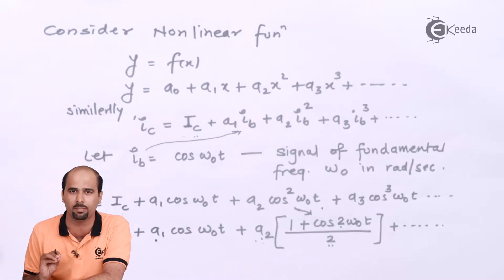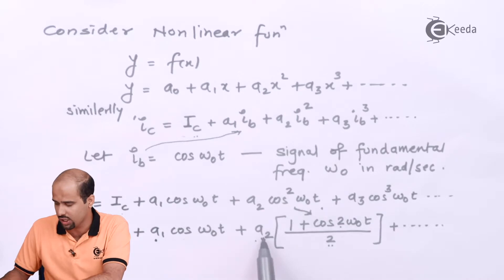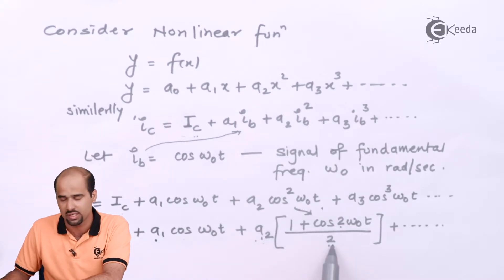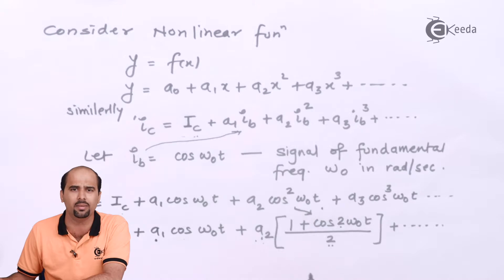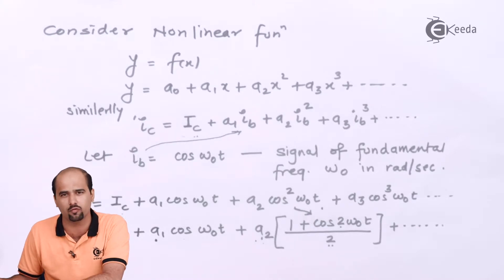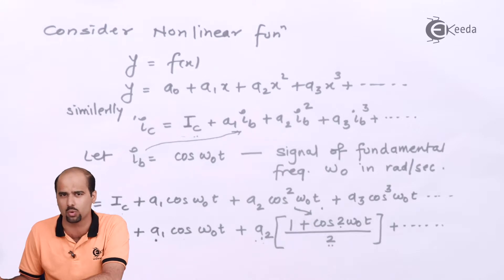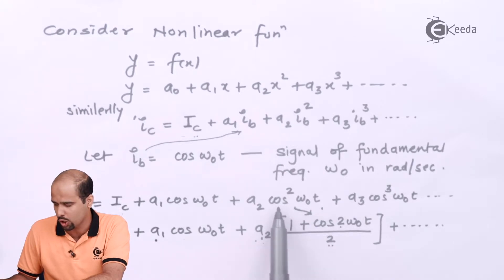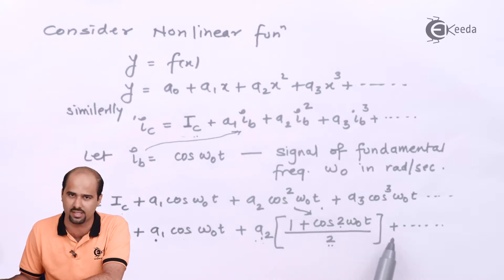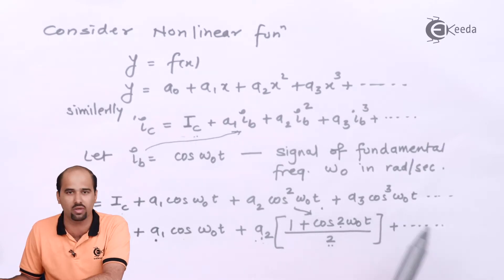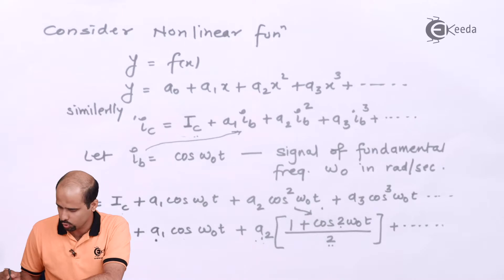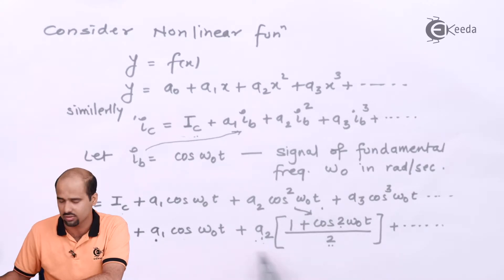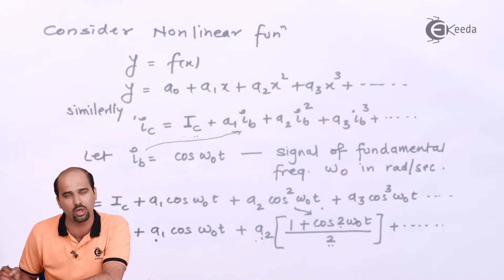Some distortion will be present, with the amplitude being reduced at each harmonic. Note that cos²(ω₀t) converts directly into 2ω₀t terms, though the expression for higher powers will be somewhat different. Right now we are focusing on only these three terms in the equation for IC. Let's proceed further mathematically.